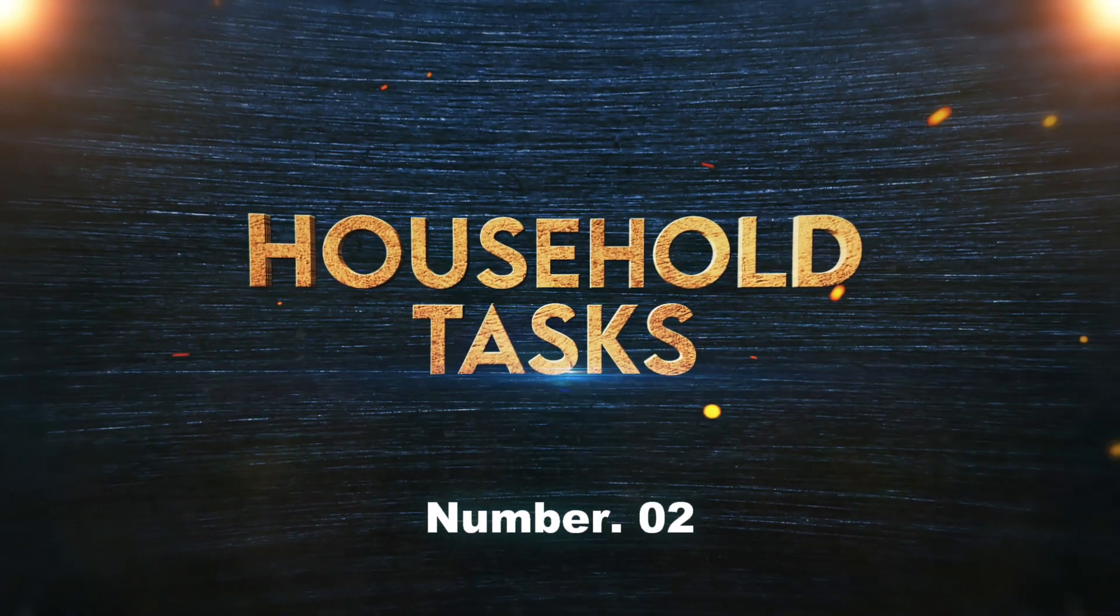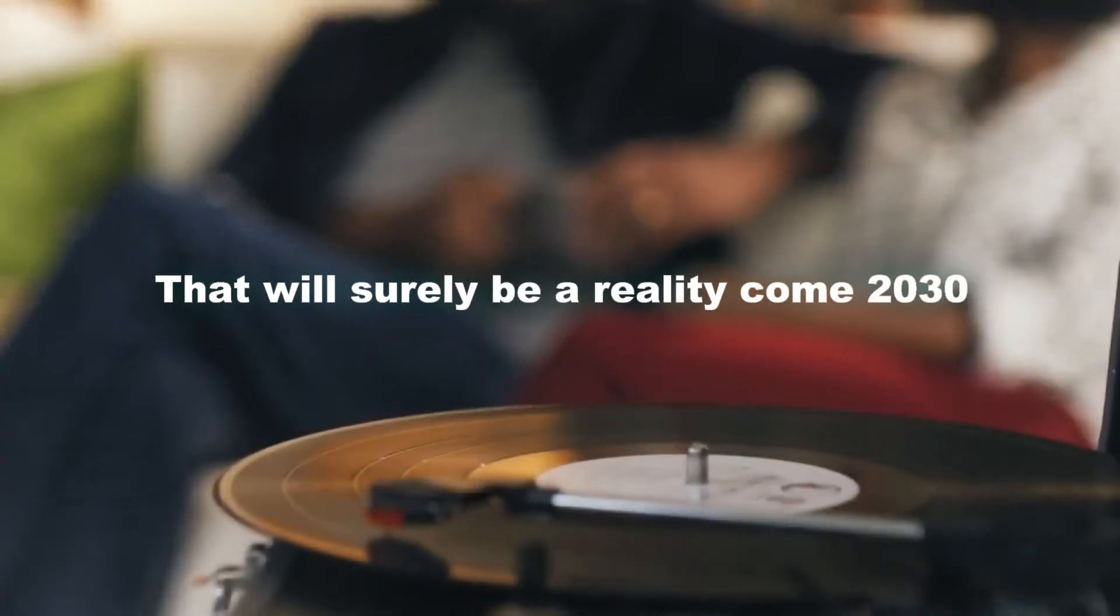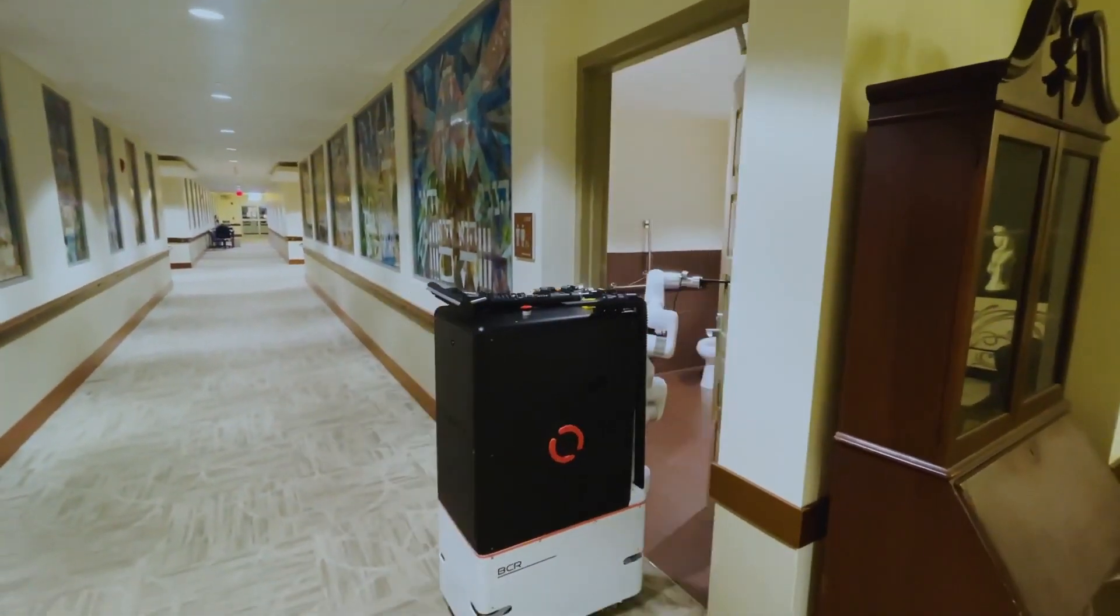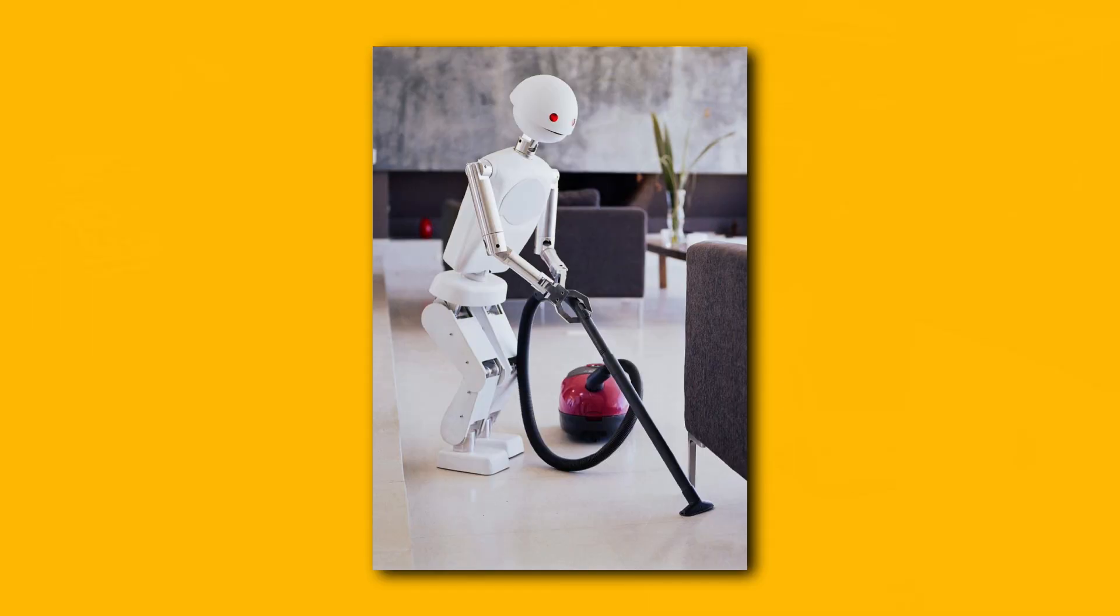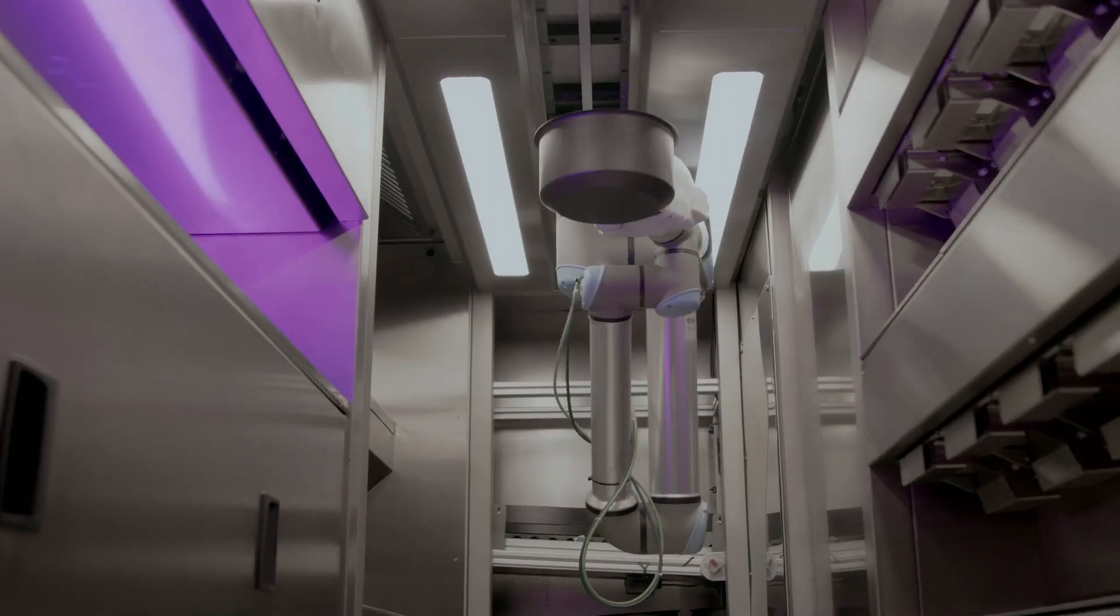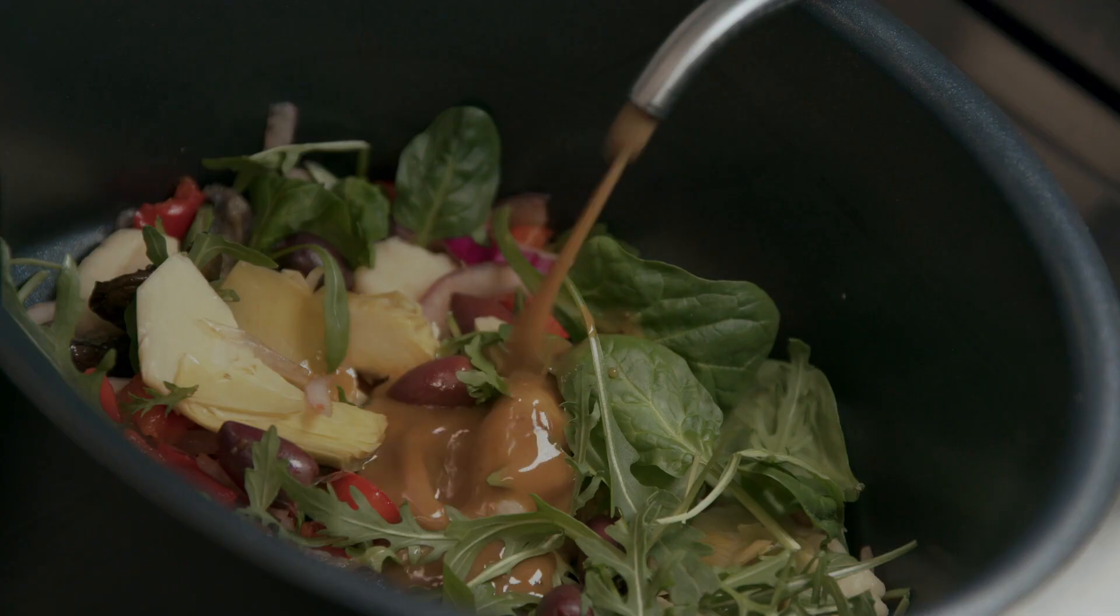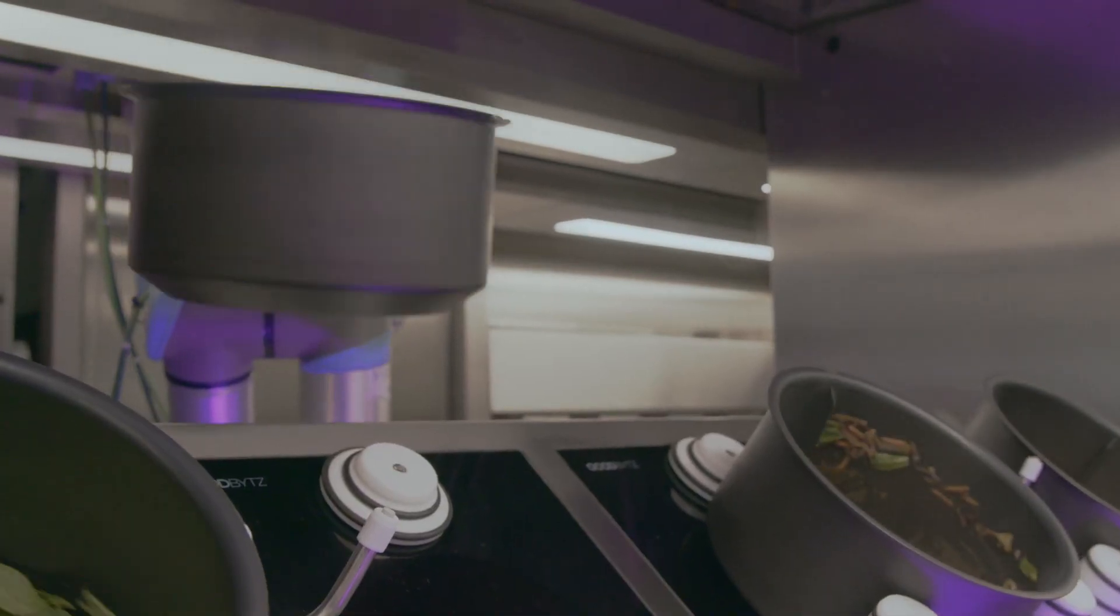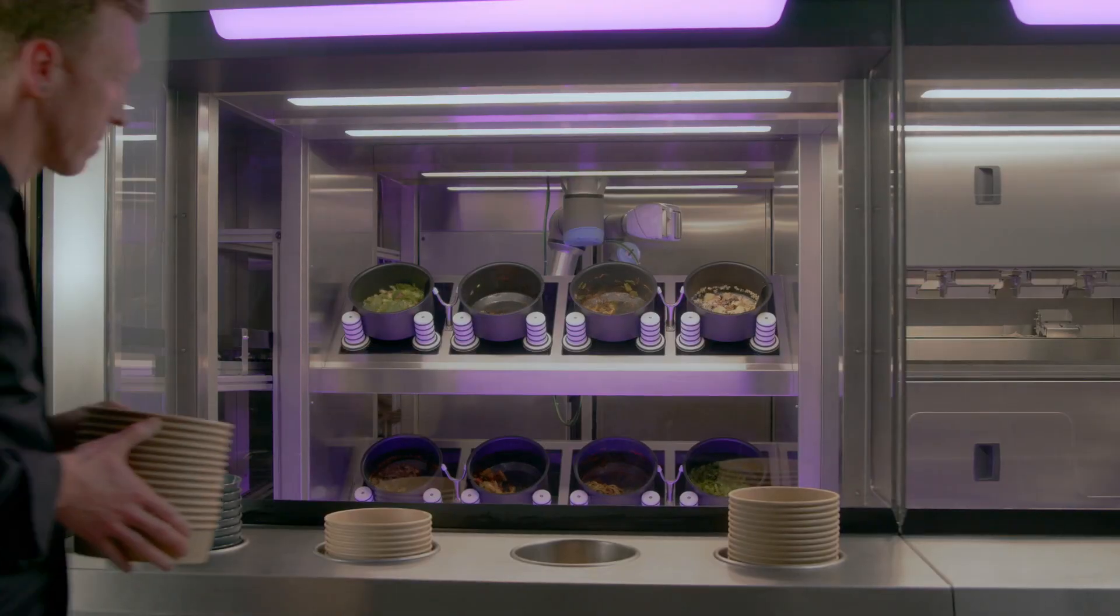Number 2. Household Tasks. Ever wanted your house to be cleaned by itself? That will surely be a reality come 2030. Cleaning robots will become even smarter, navigating your home with precision and adapting to different tasks like vacuuming, mopping or even folding laundry. Your smart kitchen will suggest recipes based on what's in your fridge, and AI will ensure your appliances work efficiently. AI-powered robots will be cooking away meals, and smart thermostats will adjust the temperatures to optimize energy use.